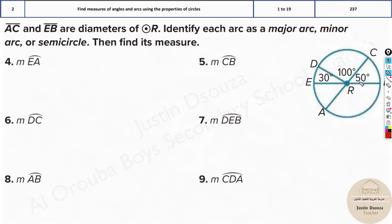Now whenever an arc is 180 degrees it is a semicircle. But if it is more than 180 degrees, anything more than 180, it is a major arc. And whichever is less than 180 it's a minor arc.